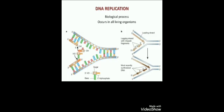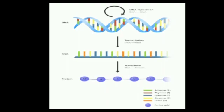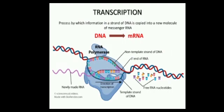Now I'd like to invite Misbah, who will further describe central dogma, transcription, and translation. Thank you, Laiba. Assalamu Alaikum. My name is Misbah Chaudhary, and I will present central dogma and DNA mutation. Central dogma includes the processes which convert the information in DNA into functional products — what we call proteins. It was first proposed by Francis Crick in 1958, the discoverer of the structure of DNA. Let's move to the first step: transcription.